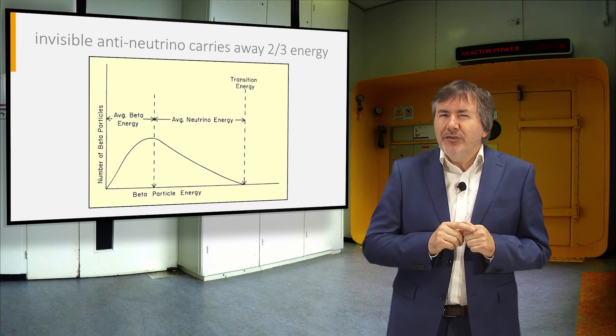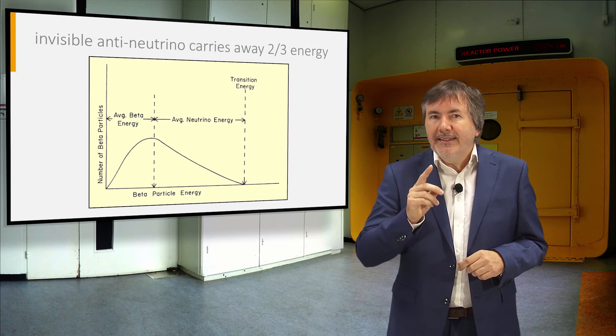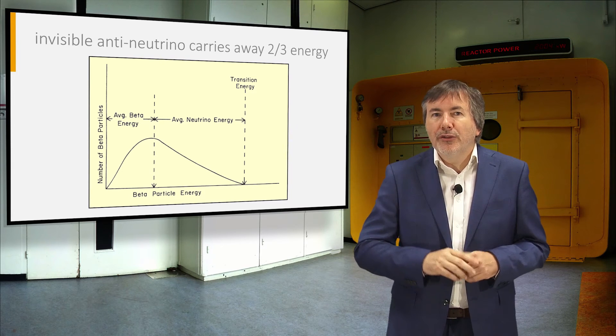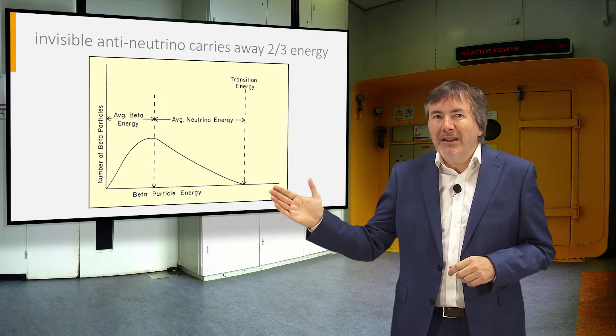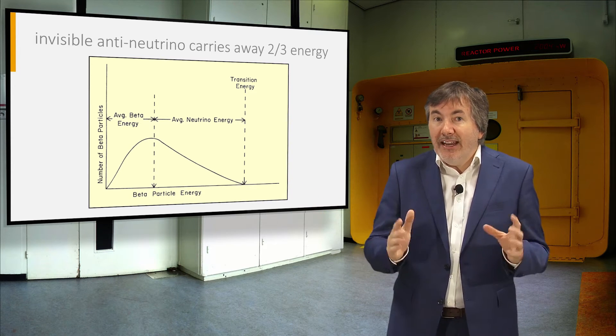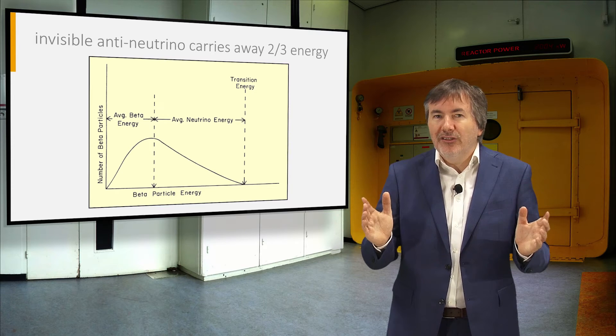The anti-neutrino cannot be detected, but we know that it takes away, on average, two-thirds of the released energy, leaving the beta particle with the remaining fraction, which can be any value between zero and the Q value.